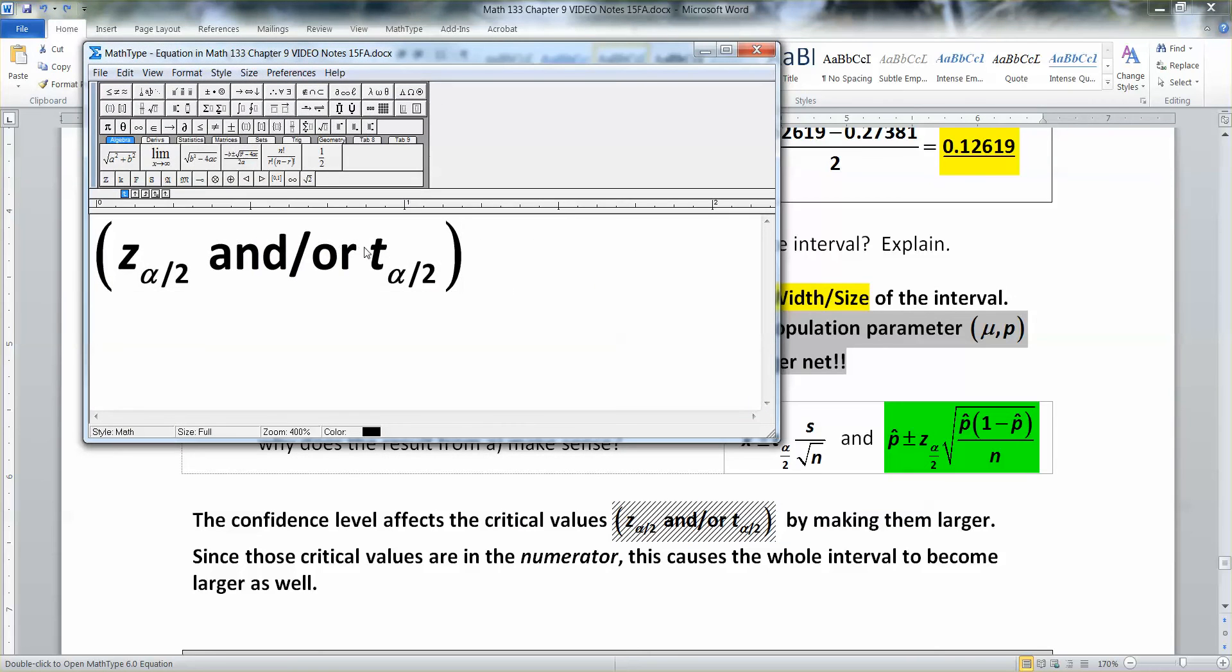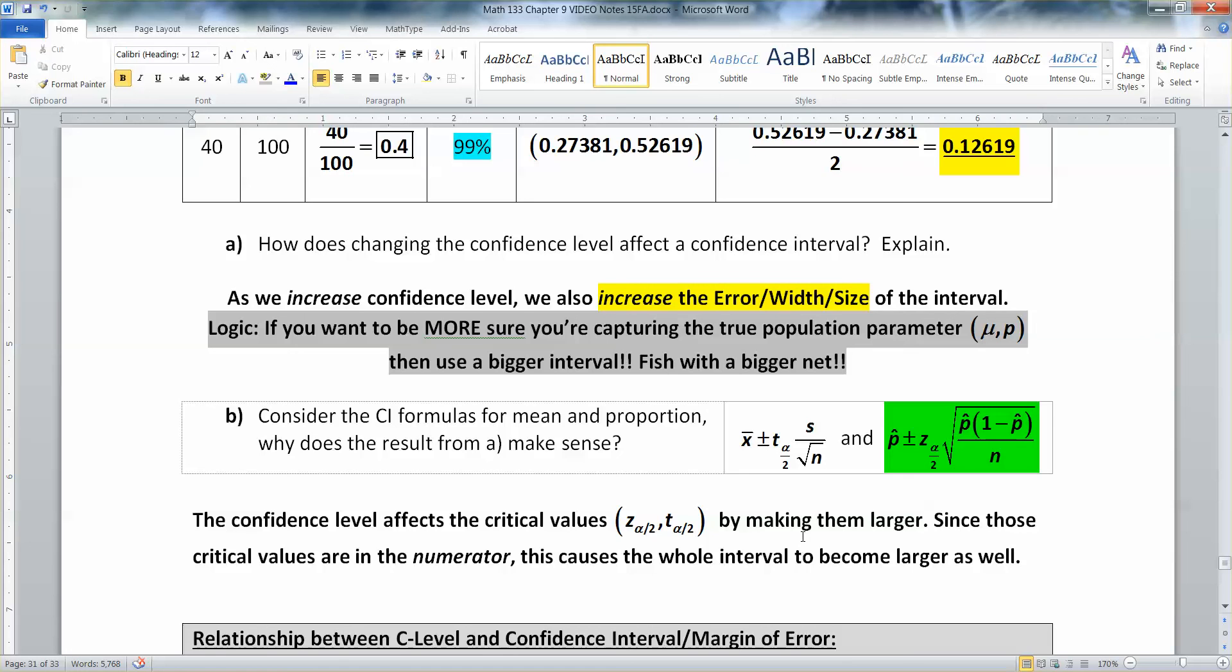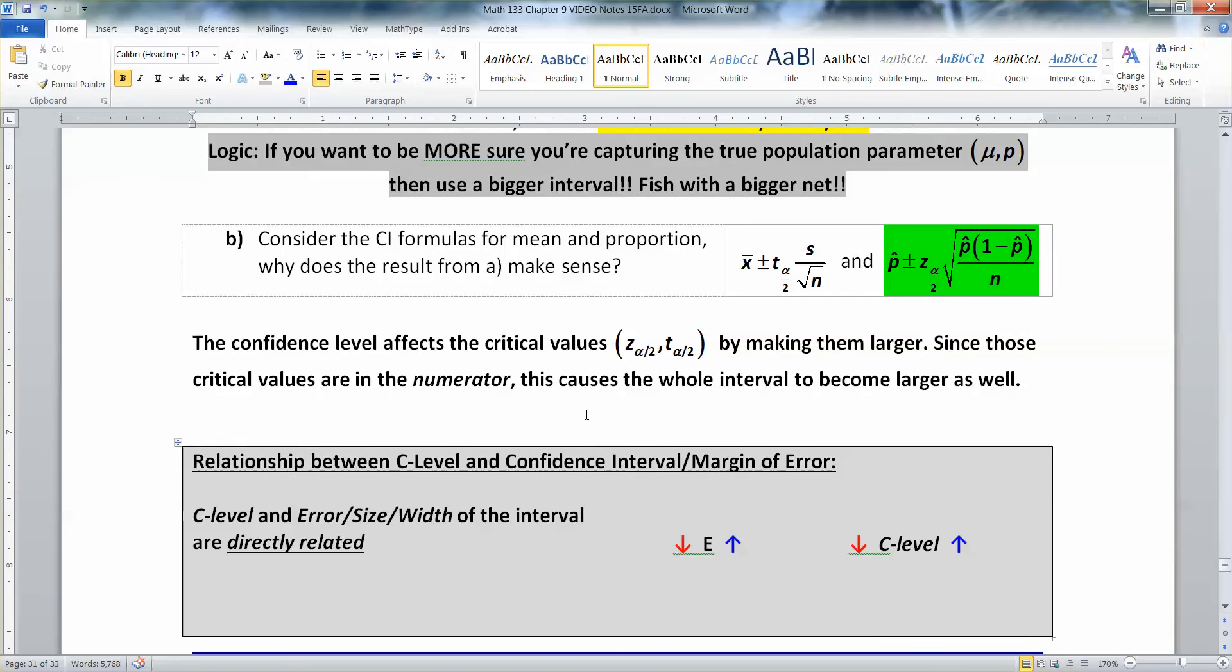So, confidence level affects the critical values, either z or t, depending on which one you're looking at. Z or t by making them larger. And since those values are in the numerator, right? They're not in the denominator, that's for sure. They're over 1, technically. They're in the numerator. That causes your whole interval to become larger as well. This means that your confidence level and your margin of error are directly related to each other. When one goes up, the other goes up.